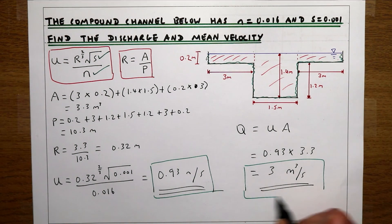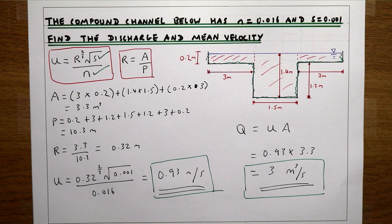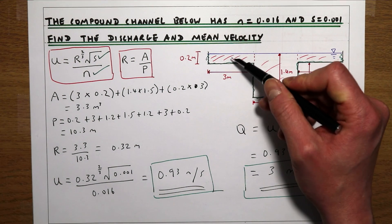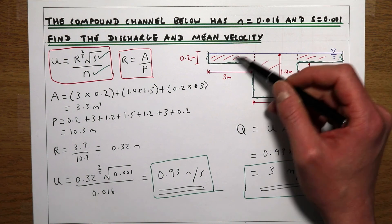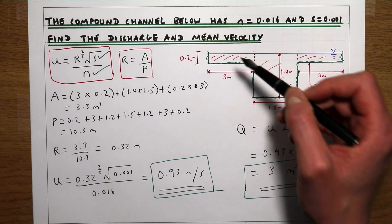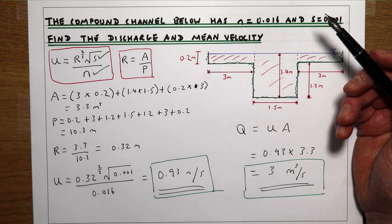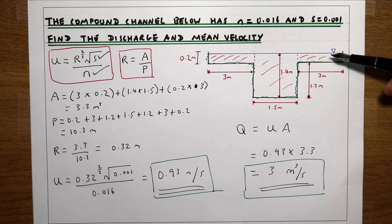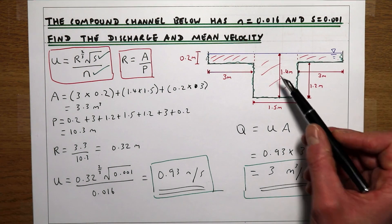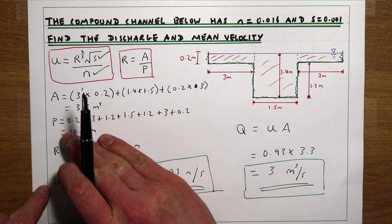This is one way to do the calculation, but its limitation is that we've assumed velocity is uniform across the whole cross-section. In reality, resistance in the floodplain limbs is much higher than in the main channel, so velocity will be higher in the main channel. The roughness may also differ between the limbs and the main channel. For a more accurate result, we can break the channel into three sub-channels and apply Manning's equation to each separately.